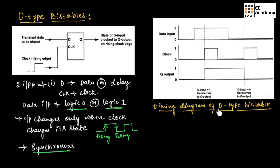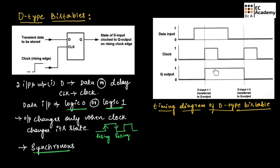Let us consider the timing diagram of D type bistable to understand its working. The input data can be either 0 or 1, represented using a low state as well as a high state. When clock is 0, output will be in the previous state — let us assume the previous state is 0. Whenever we apply a clock, at the rising edge of the clock, whatever input is there, that input will appear at the output. At the first clock pulse, at the rising edge of the clock, we are having input 1, so the output will be 1.